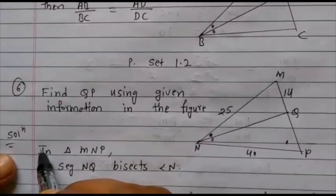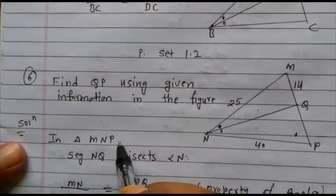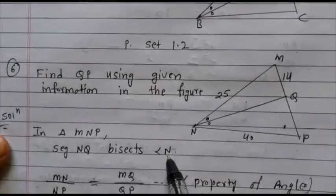So, what to start writing from what is given? In triangle MNP, segment NQ bisects angle N.